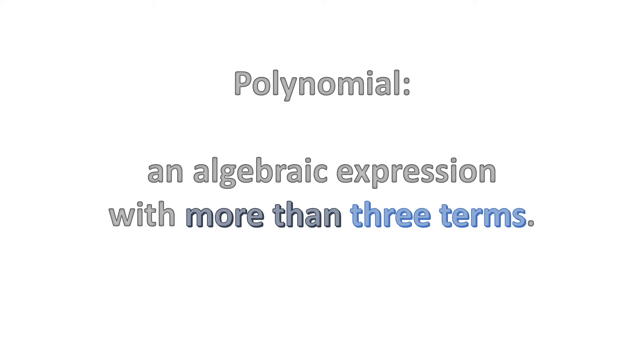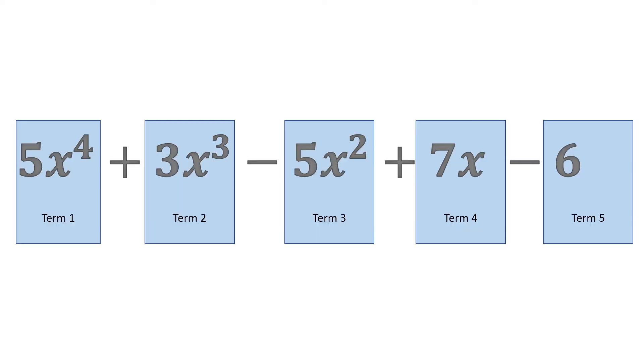This is a polynomial. 5x to the power of 4 plus 3x cubed minus 5x squared plus 7x minus 6. 5x to the power of 4 is the first term. 3x cubed is the second. 5x squared is the third. 7x is the fourth. And 6 is the fifth.